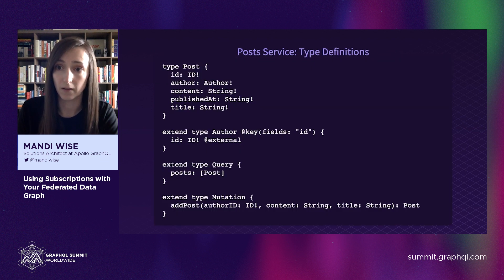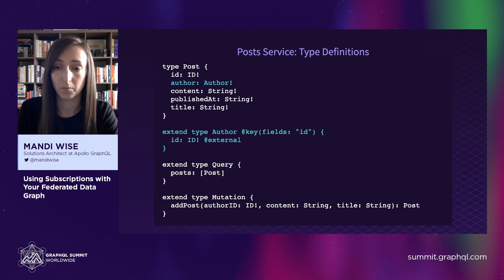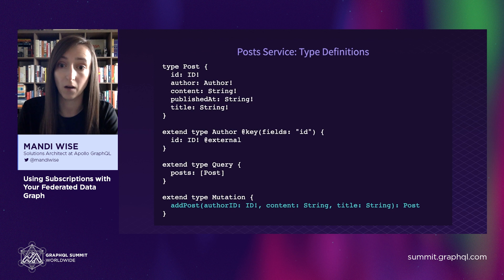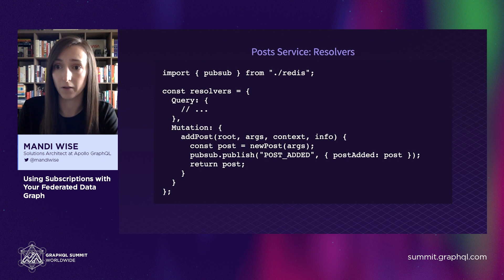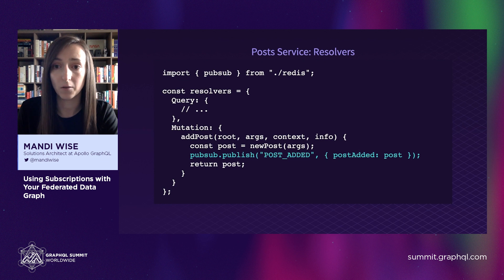In our post service, we reference an author entity from the author subgraph as the author field on the post type, referencing that author based on its ID key field. We also have an addPost mutation, which is where we publish a message to Redis about a new post's availability. Over in the post resolvers, we do exactly that inside the addPost resolver, publishing a post-added message with a payload containing some of the new post's data.